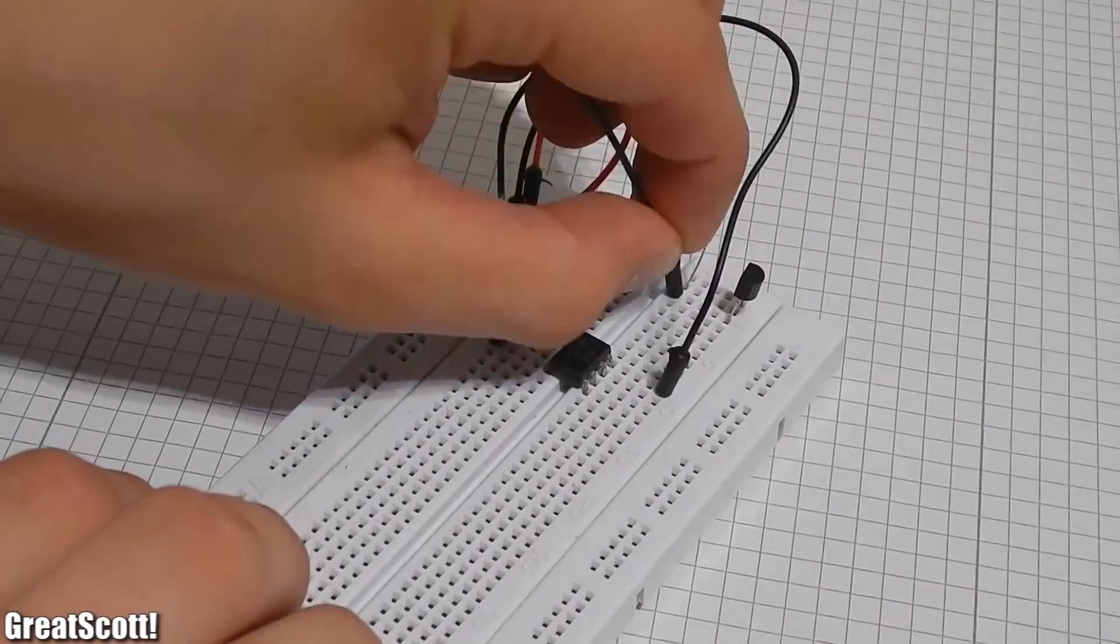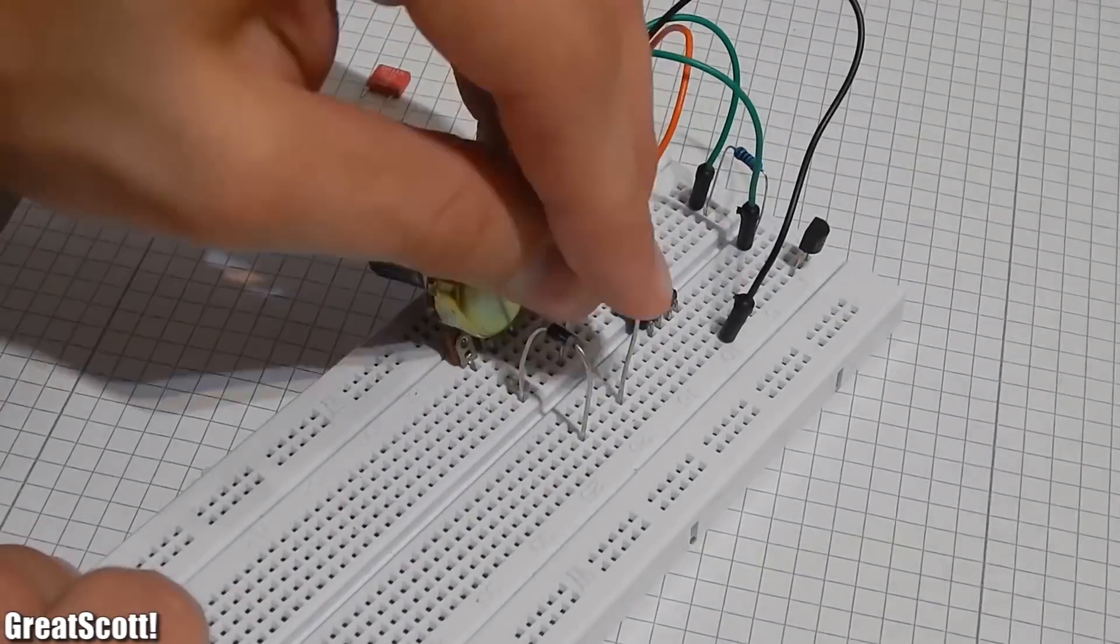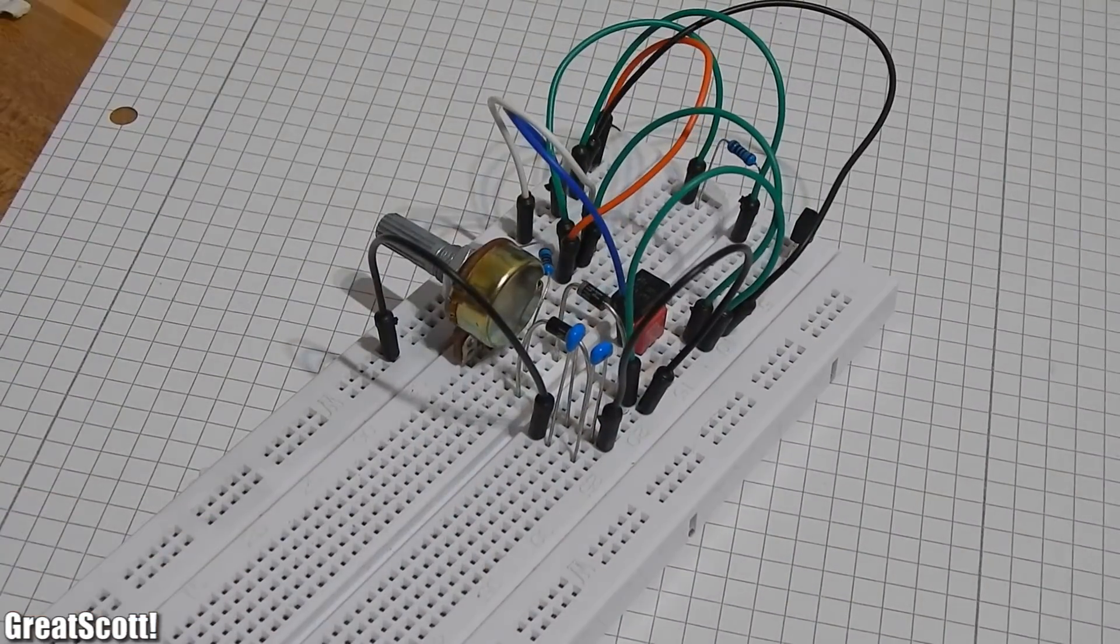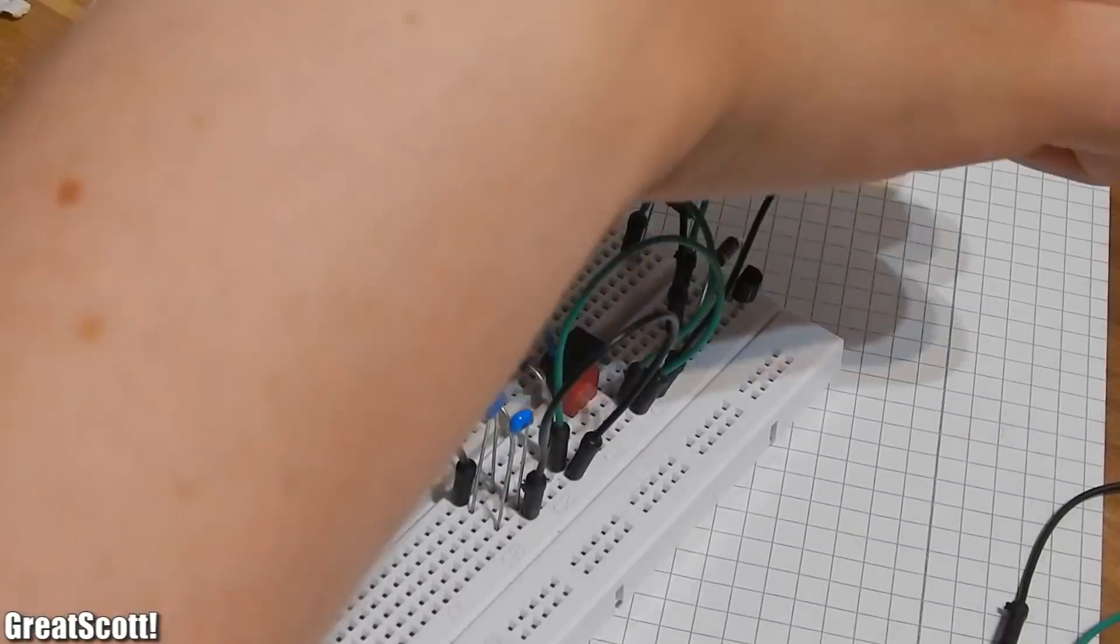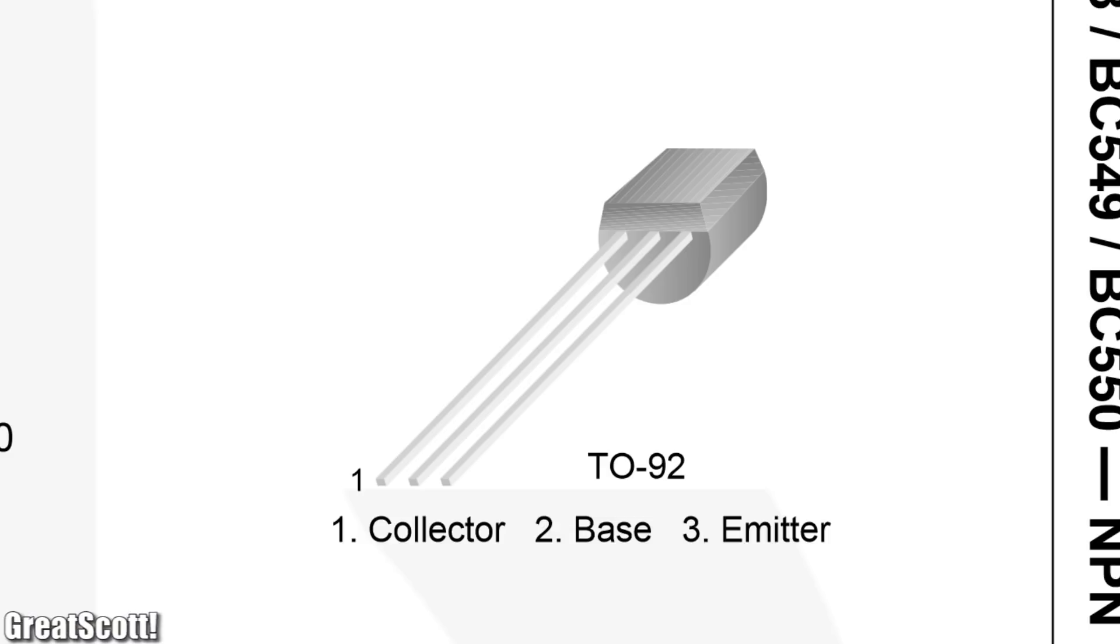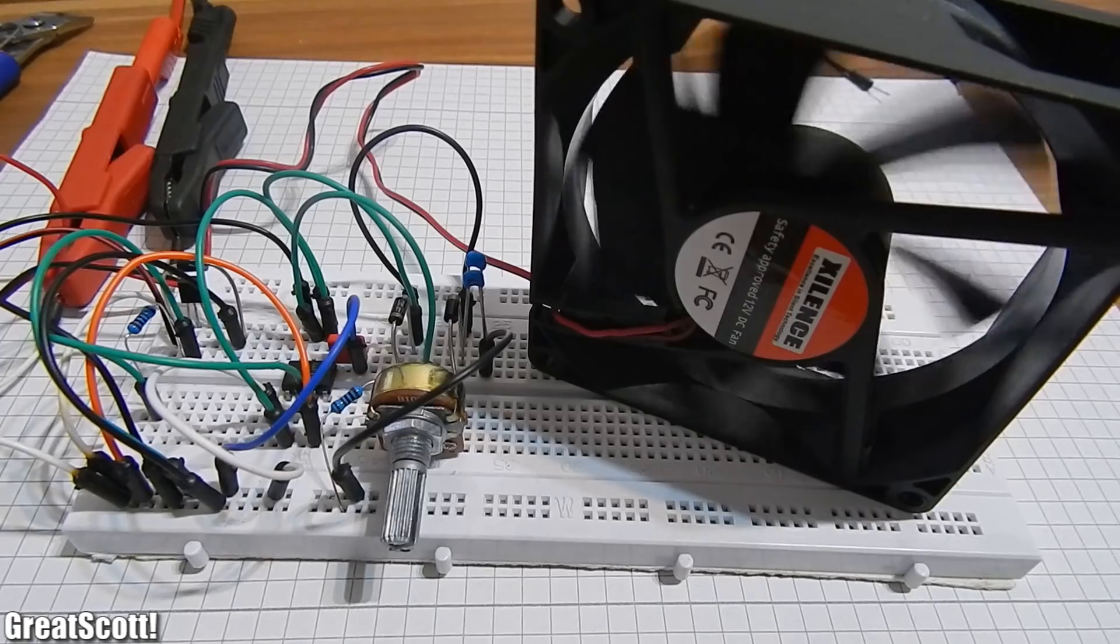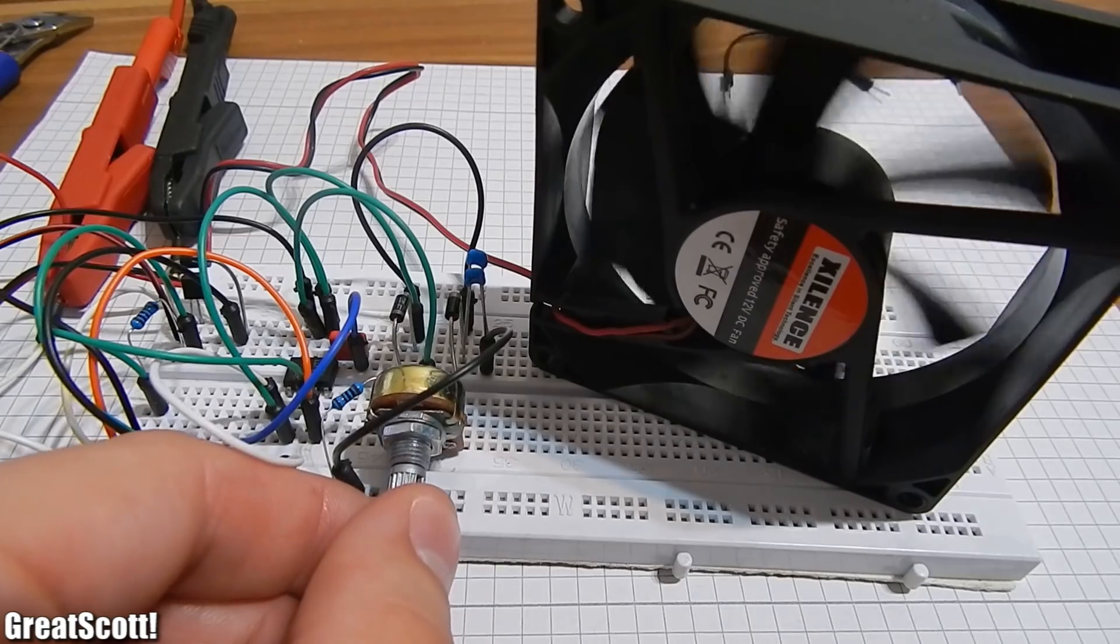But enough theory for now. Let's firstly build it on a breadboard. The schematic should be self-explanatory. All pretty basic components. Just look out for the pinout of the transistor. In my case it is collector, gate, and emitter from left to right. And the line on the diode symbolizes the line on the component. Okay, it seems like everything works fine.